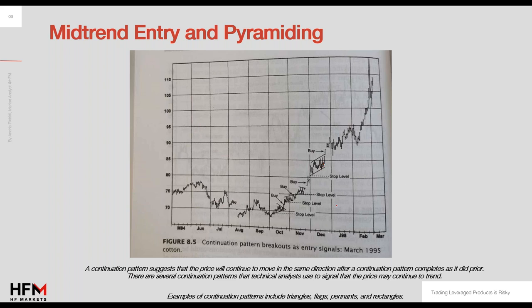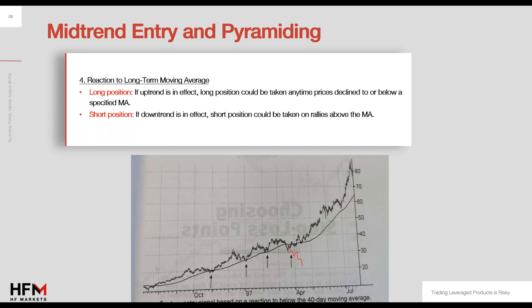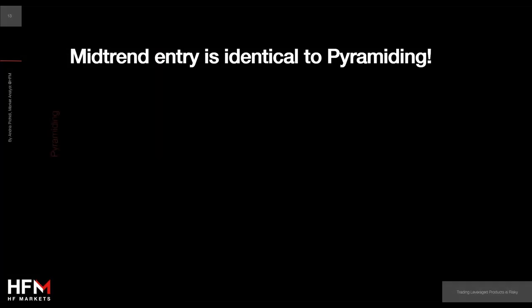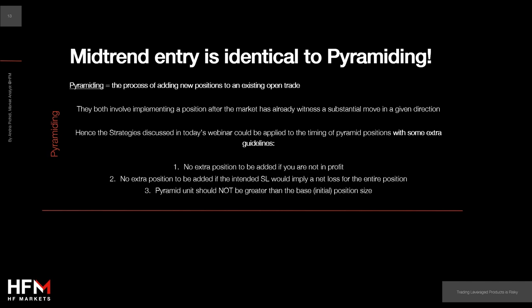Let's assume you bought at the very beginning for 30, then purchased an additional lot at 35, then at 45, and so on as the market continues to rise. Both pyramiding and mid-trend entry involve implementing a position after the market has already witnessed a substantial move. All four strategies discussed today could also be applied to the timing of pyramid positions.